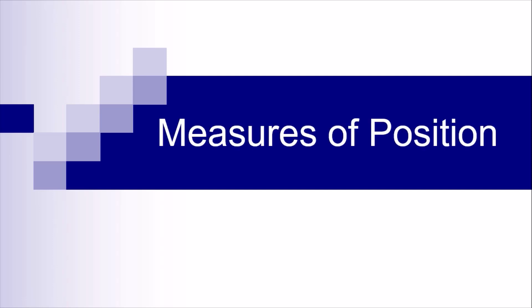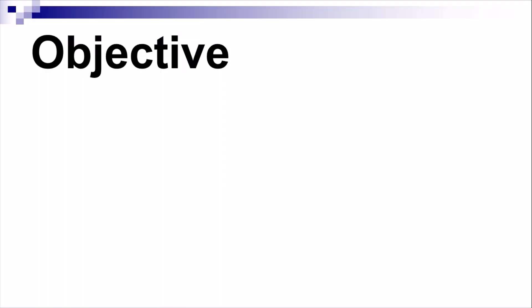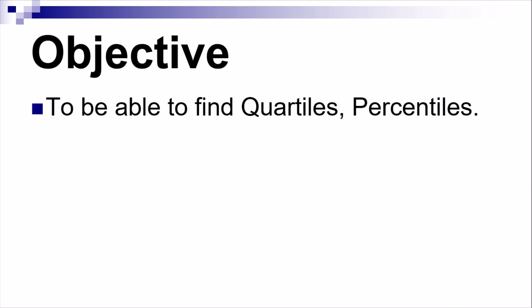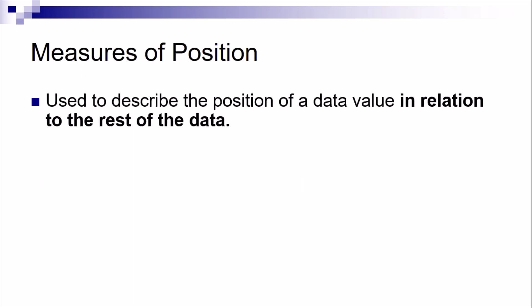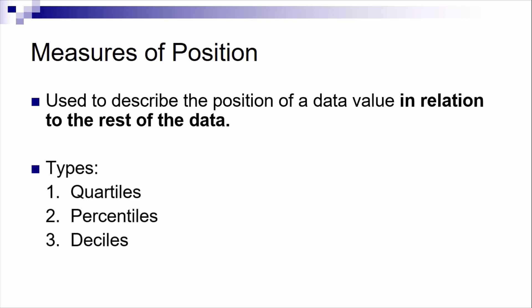Good day! In this tutorial video, you will learn another set of measures in statistics — these are the measures of position. Our objectives are: to be able to find quartiles and percentiles, to draw box plots (also called the box and whiskers plot). Measures of position are used to describe the position of a data value in relation to the rest of the data. The types of measures of position are quartiles, percentiles, and deciles.